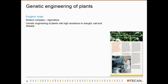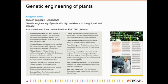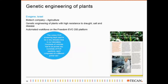Genetic engineering of plants. Evogen is a biotech company in Israel interested in generating plants with high resistances to droughts, salts, or diseases. They use a big FreedomEvo robotic platform, including the Piccolo, to automate different workflows like primer normalization, PCR amplification, PCR purification, restriction, ligation, colony screening, colony picking, culture inoculation, glycerol stock preparation, plasmid miniprep, sequencing preparation, heat shock transformation, and agar plate preparation - bringing the total up to 13 different processes.